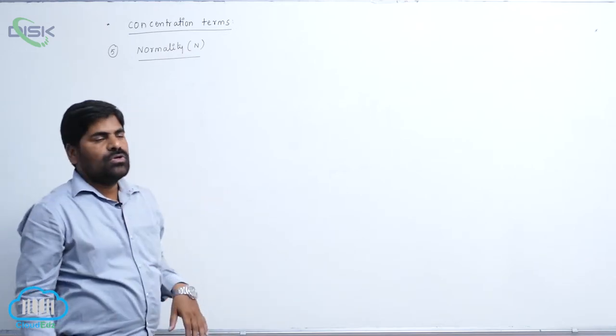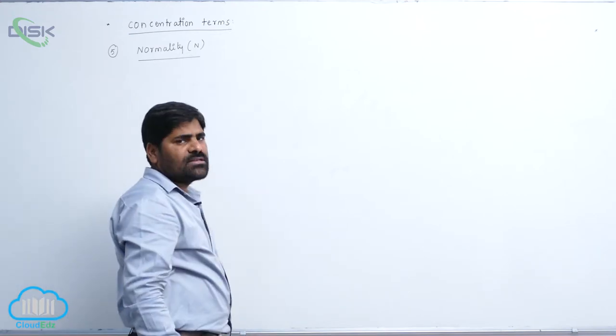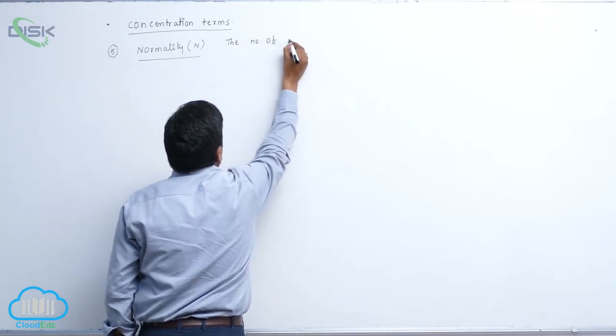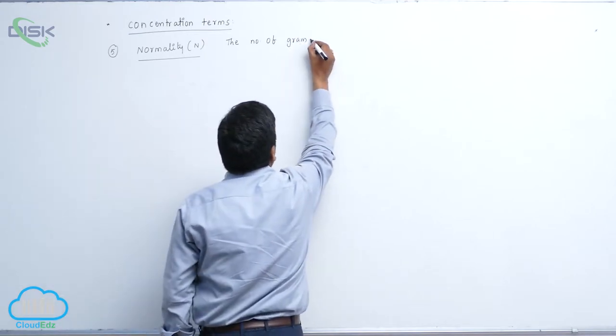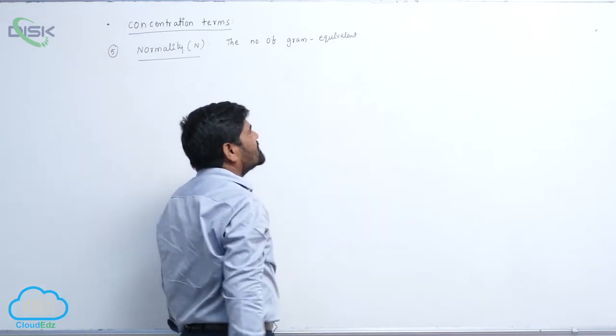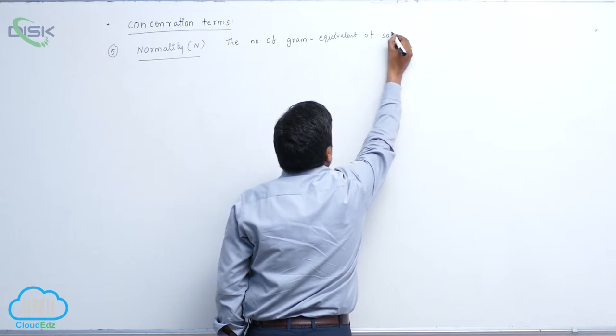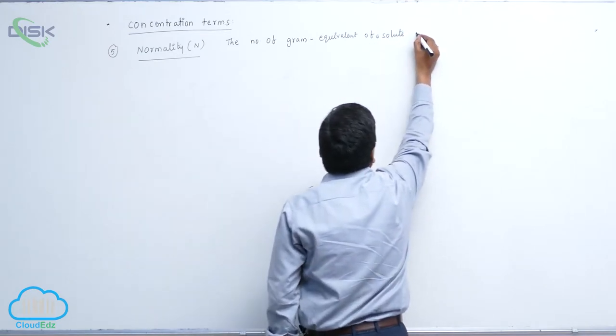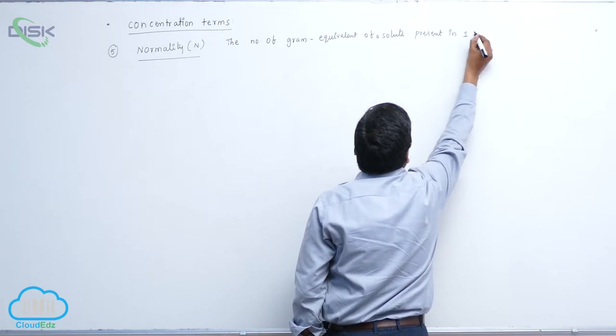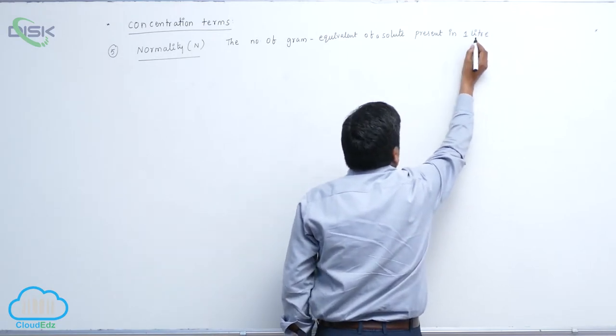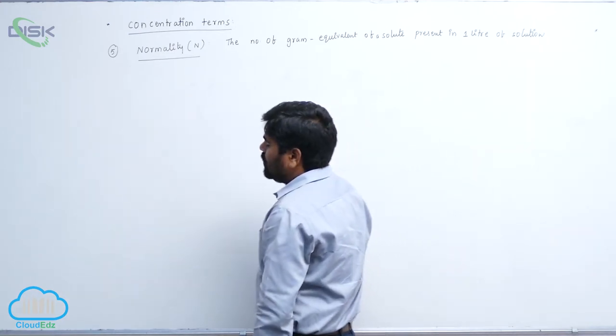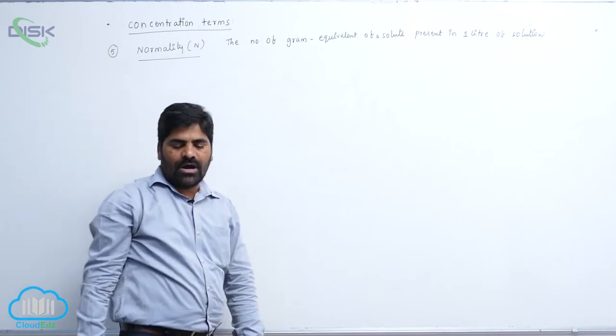Therefore it may be defined as the number of gram equivalents of a solute present in 1 litre of solution. This is known as normality.